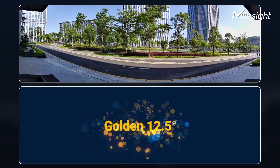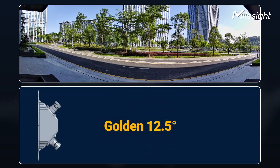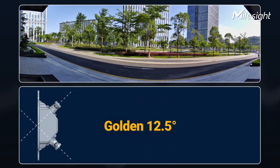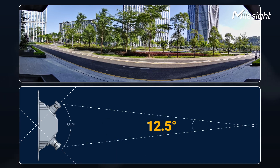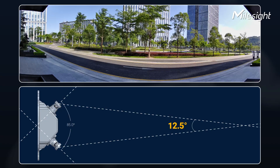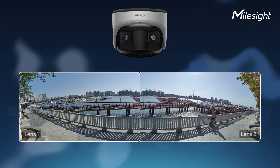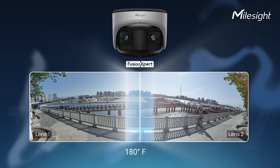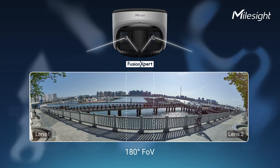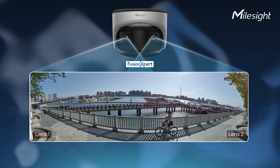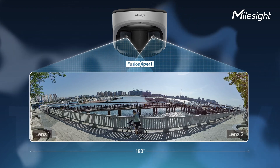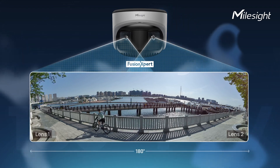The golden 12.5-degree principle effectively tackles image distortions caused by spatial difference between the two sensors. It not only provides a full 180-degree field of view, but also reduces the effects of parallax.